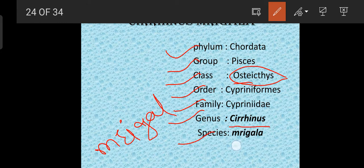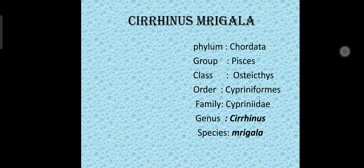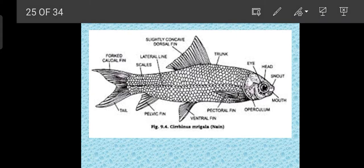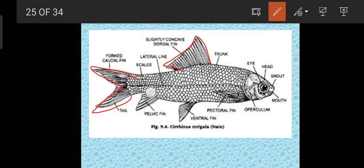Now we will look at the diagram of the fish. There is the dorsal fin on the dorsal side, the caudal fin which is forked, the pelvic fin, the ventral fin, and the pectoral fin. The operculum is also present. The eye and snout are present. Barbels — which are hair-like structures on the head — are totally absent in this fish.